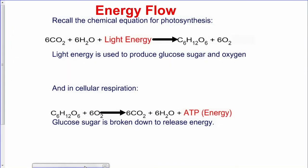During photosynthesis, the raw materials — carbon dioxide and water — in the presence of light, produce glucose and oxygen, which is the byproduct of photosynthesis. In cellular respiration, which takes place in the cells of an organism, glucose is broken down to release energy in the form of ATP molecules.